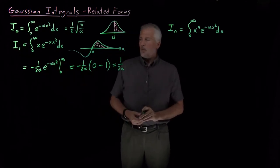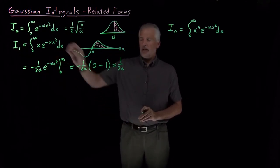So that negative sign cancels this negative sign, and the result is just 1/(2α). So I sub 1 was not terribly difficult to calculate, much easier than I sub 0.